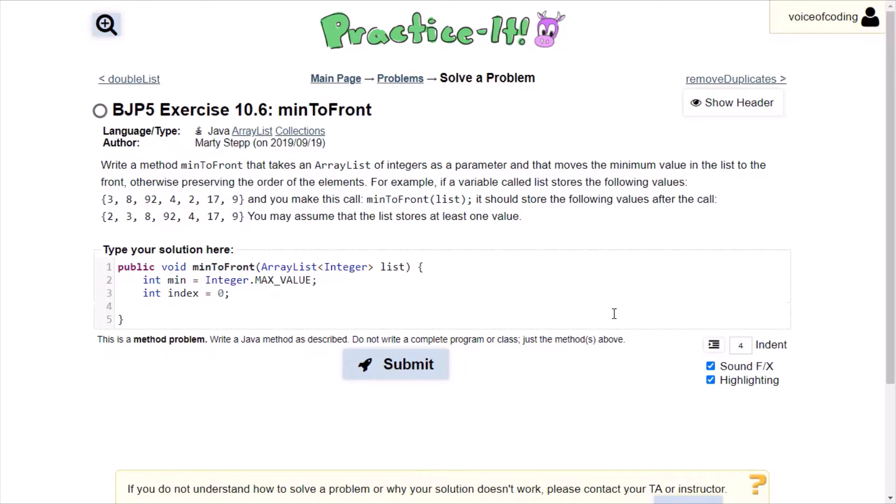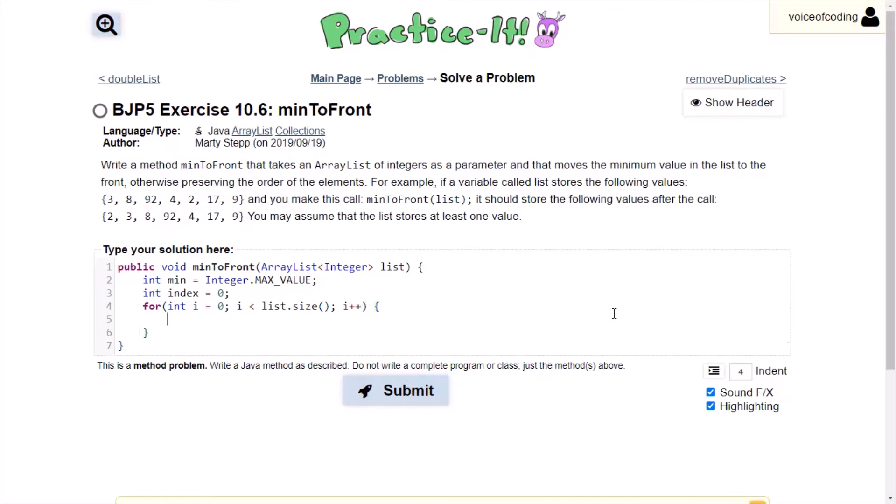So we're going to loop through the list. Then inside the list, we're mainly checking two things. We're checking if, or actually we're checking only one thing. We're just checking if the current value is smaller than our stored min value. So let's do that.